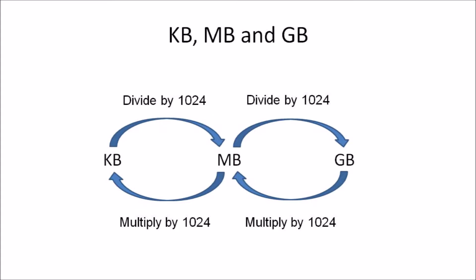If we are converting from kilobytes to megabytes, we need to divide by 1024. If we are converting from megabytes to gigabytes, we again divide by 1024. On the other hand, going backwards: to convert gigabytes to megabytes, we multiply by 1024, and to convert megabytes to kilobytes, we also multiply by 1024.